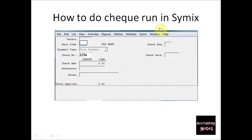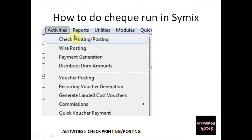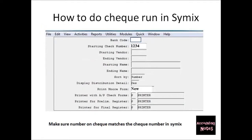Once you are satisfied after reviewing all the vendors, the next step is to go to Activities on the Cymex toolbar and click Check Printing/Posting. When you click Check Printing/Posting you will see a new window where you need to update the information.